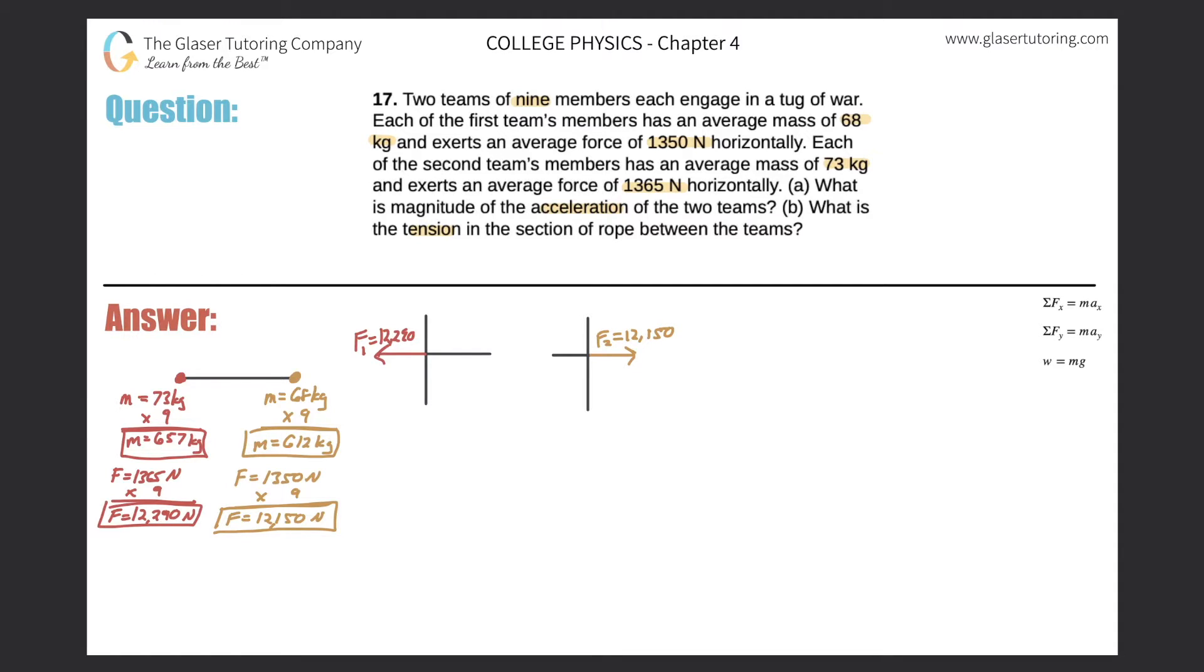So now the second team is exerting a force in the opposite direction here. And the total force that that team is exerting, call it F2, is going to be 12,150 newtons. Now, if I were to just have these two forces in the picture, what does this imply? Well, this implies then that the rope in between connecting these two teams together is going to break. But the rope is not going to break. There has to be some other force going on within the rope itself that's holding the rope together.